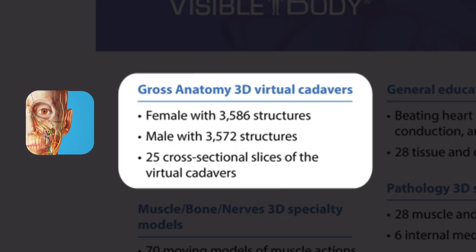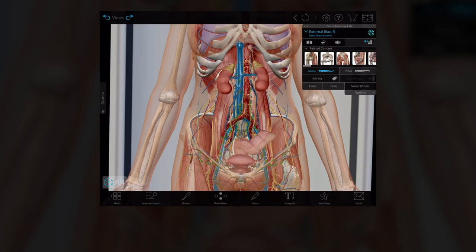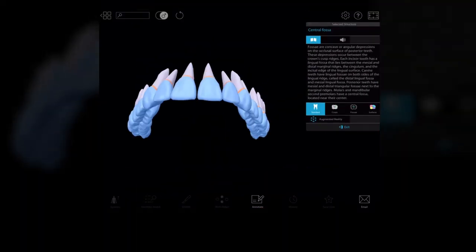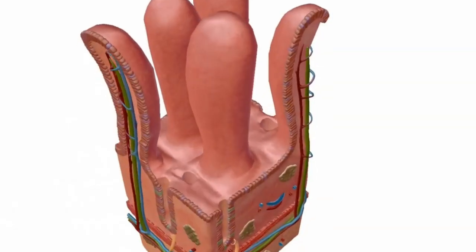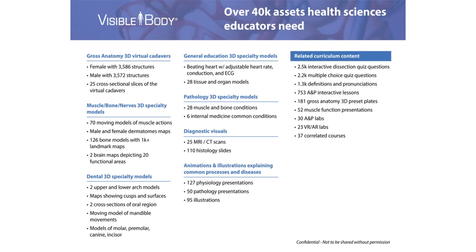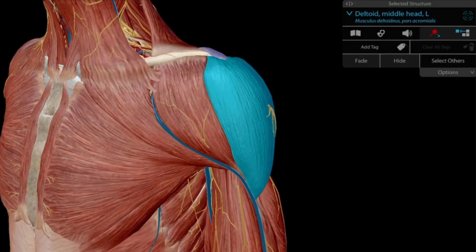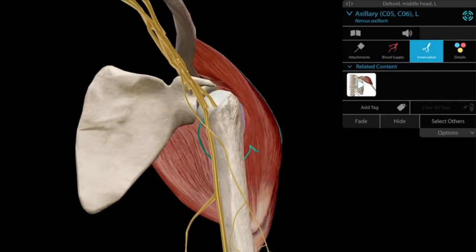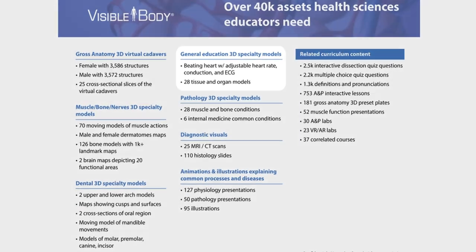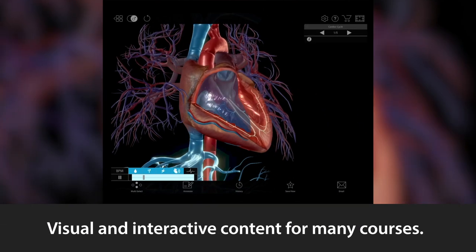If you are teaching a lab course, there are female and male gross anatomy dissection models, and enough micro-anatomy to teach specialties. For physical therapy courses, there is muscle and bone specialty content. There is also physiology and pathology content that covers topics in the anatomy and physiology course and more.